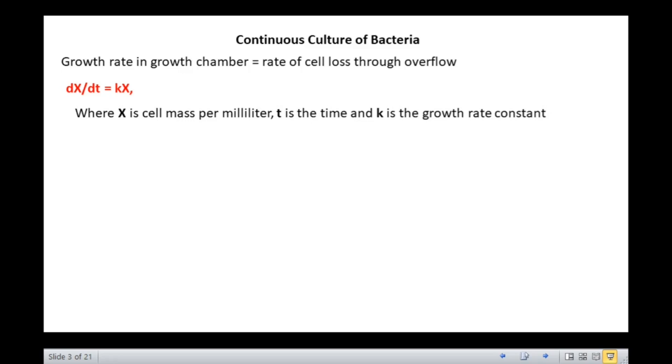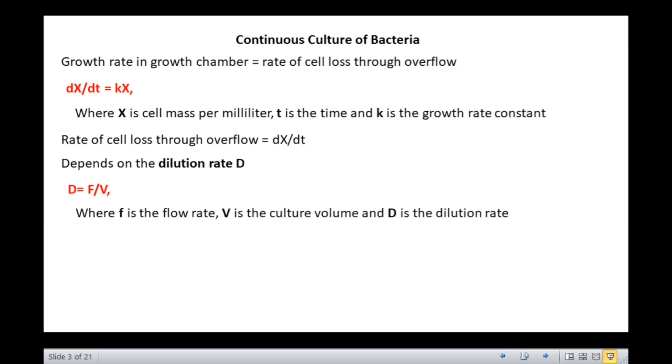Since growth rate equals cell loss, rate of cell loss through overflow equals dx/dt depends upon the dilution rate d. D equals f/v. Therefore, dx/dt equals fx/v equals dx, where f is the flow rate, v is the culture volume, and d is the dilution rate.